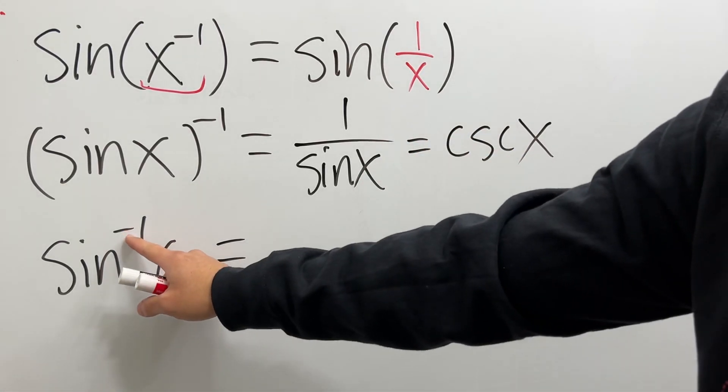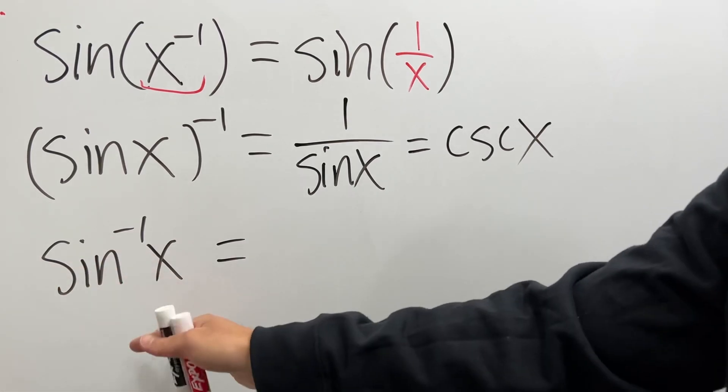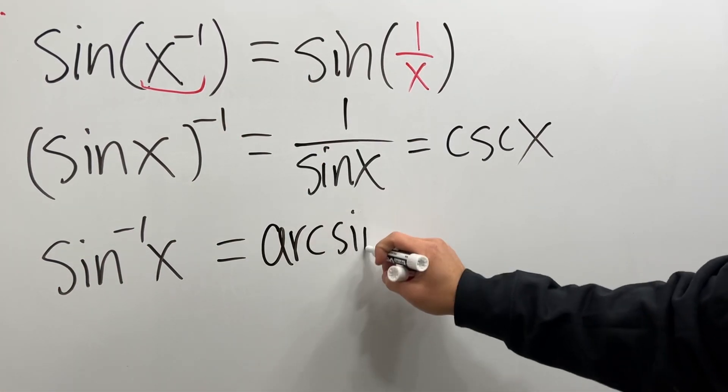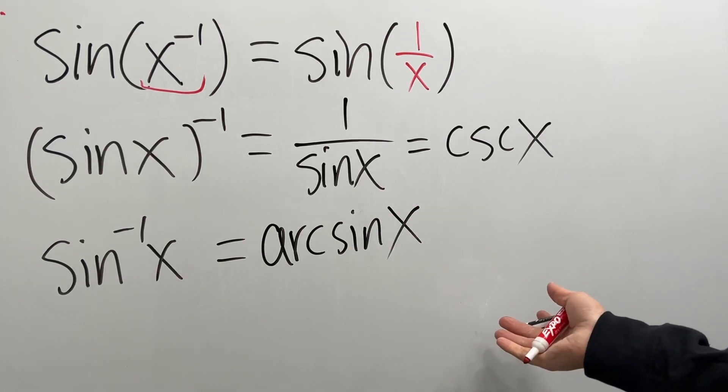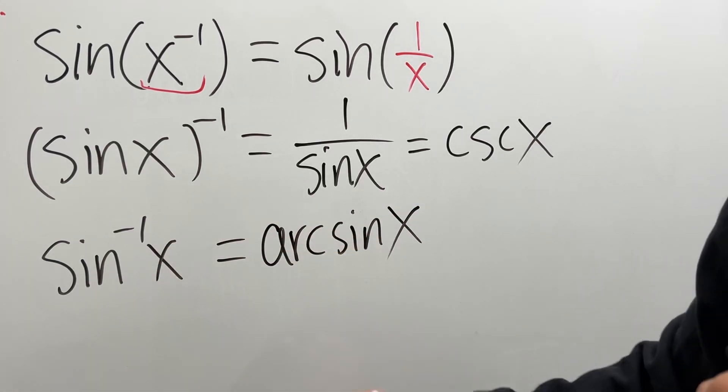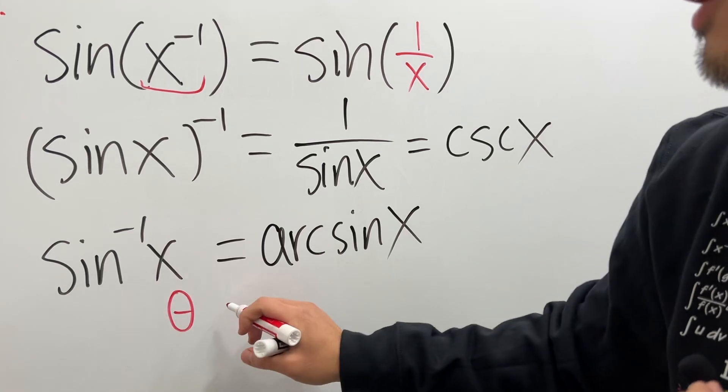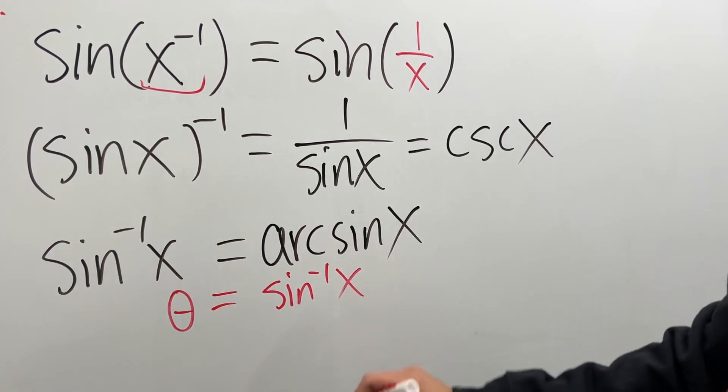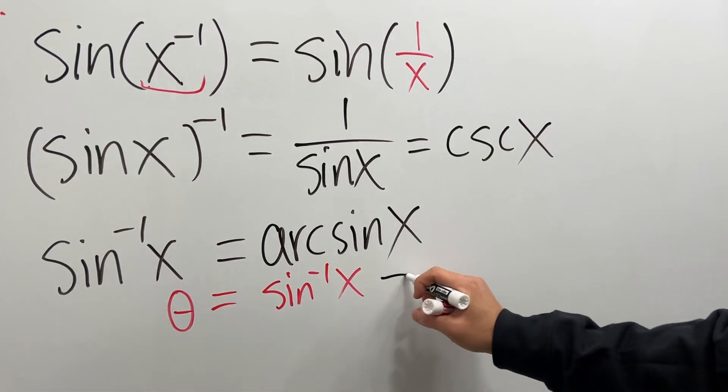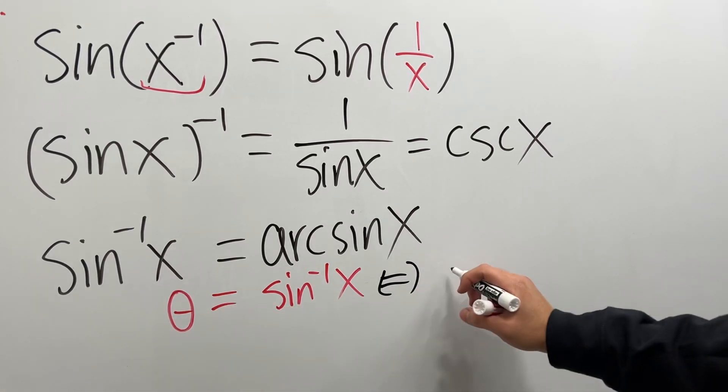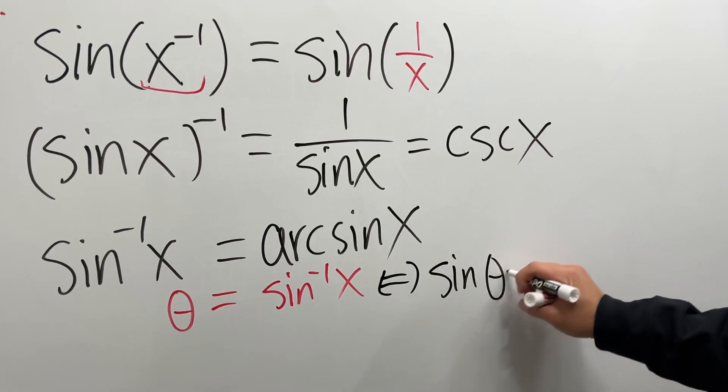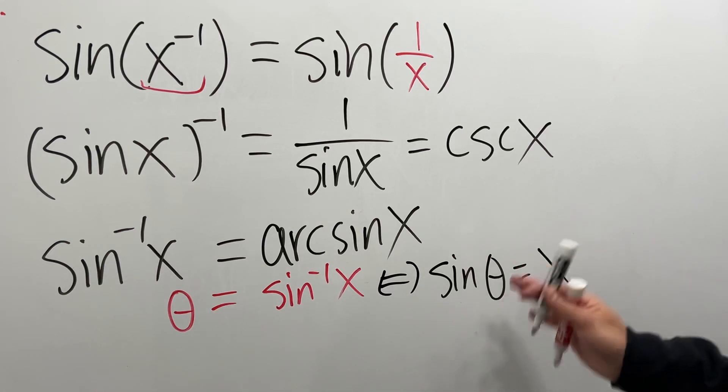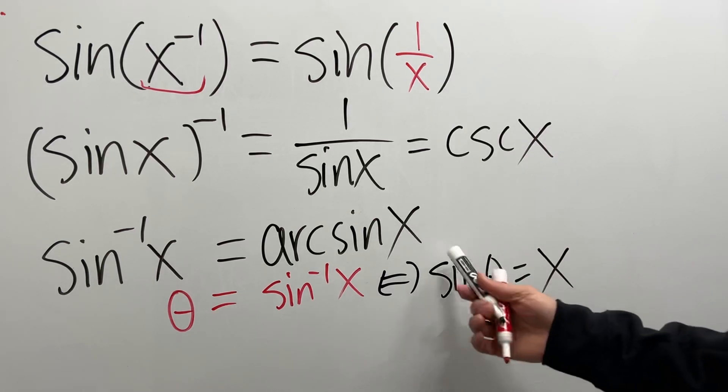Lastly, when you have a negative 1 right here without any parentheses or whatnot, this right here is the inverse sine function or also known as the arc sine function. What this means is that if you have an angle theta being equal to arc sine of x, then this is equivalent to say sine of theta is equal to x. And of course there are some domain issues, but this video is too short for that. So that's it.